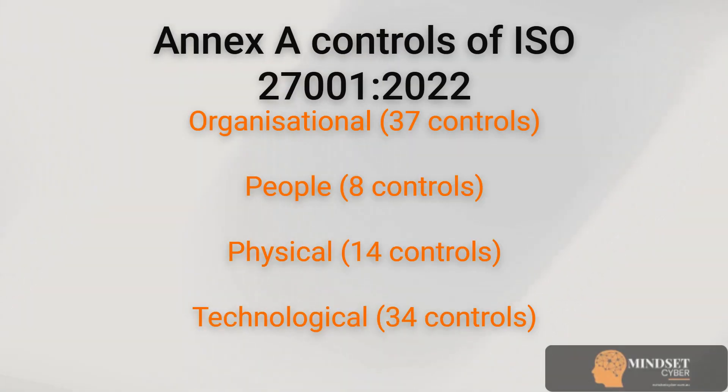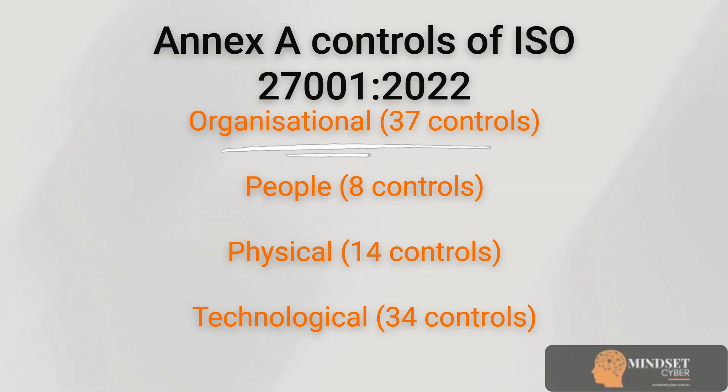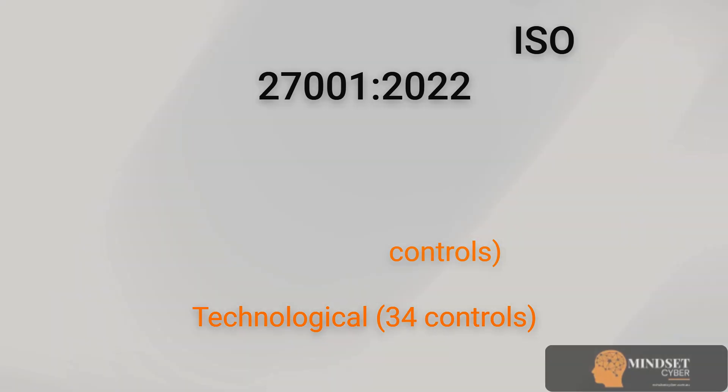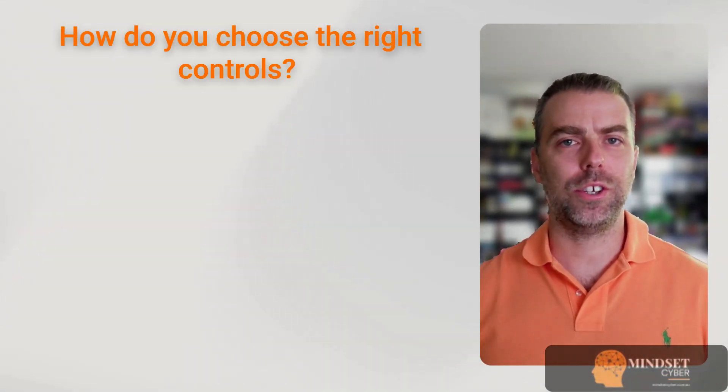Let's talk about what tends to be the most daunting part of ISO 27001 — the Annex A controls. In the 2022 version of the standard, there are 93 controls grouped into four categories: organisational controls, people controls, physical controls, and technological controls. Here's the important bit: you don't have to implement all 93 controls. ISO 27001 is risk-based. You choose the controls that are relevant to the risks you've identified, and document that in your statement of applicability.